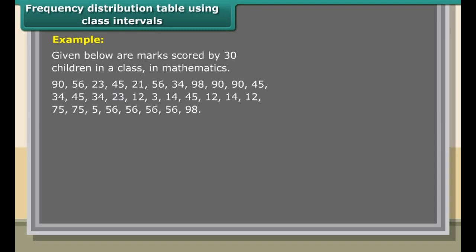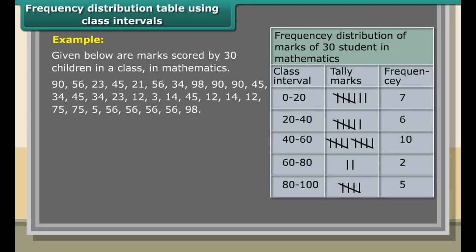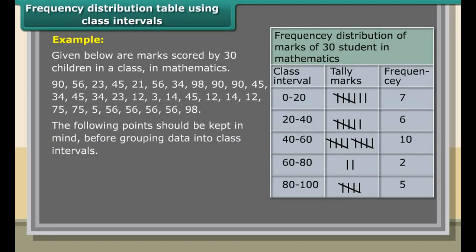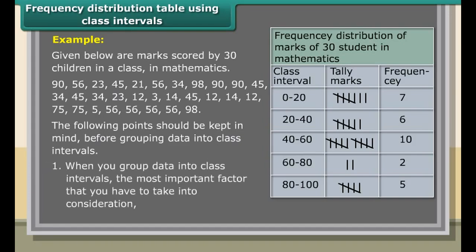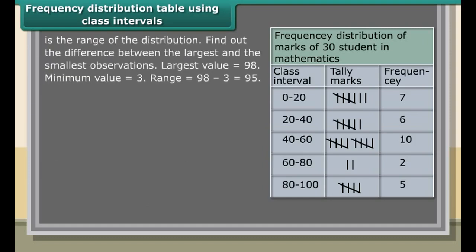From this data, we know only the performance grade of the students in a month. Let us form a table as follows. This table shows clear picture of the given data. From this table, we come to know the number of students in each grade. This table is known as frequency distribution table. The number of times a particular observation occurs in a given data is called its frequency. A frequency distribution shows how frequently a particular item occurs in a group.